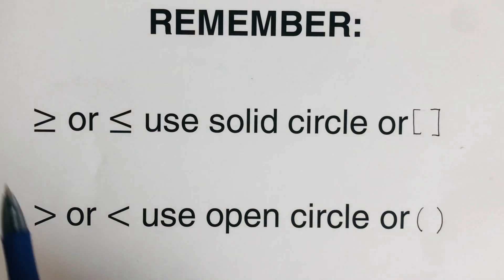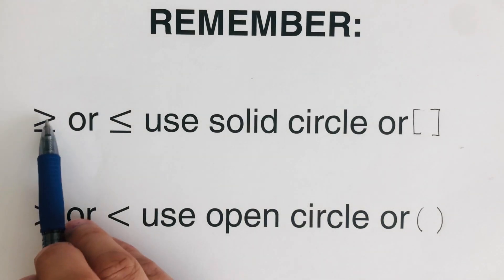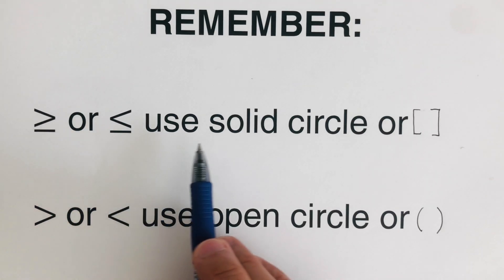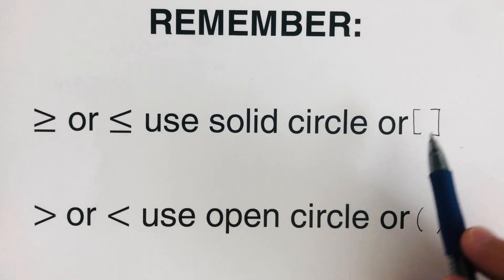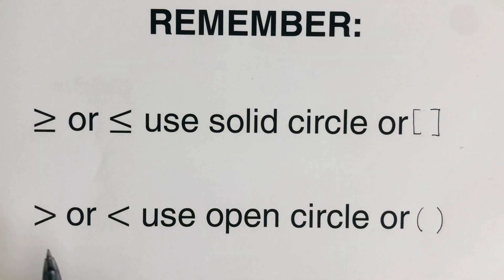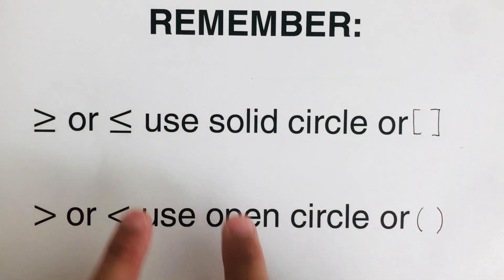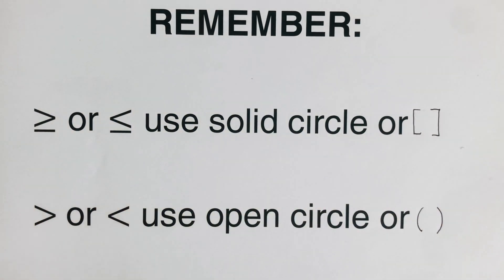When we have greater than or equal to, or less than or equal to, we use a solid circle or a bracket when graphing. When the inequality is strictly greater than or less than, we use an open circle or a parenthesis. We'll use these rules when graphing absolute value inequalities in one variable.